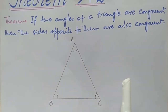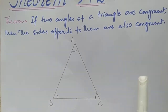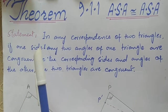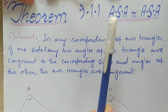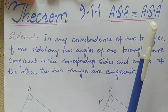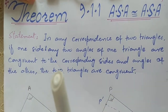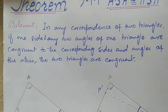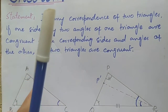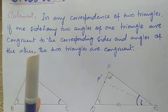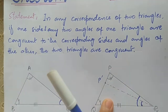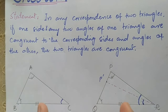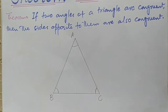We will use the previous theorem to prove this theorem — that is Theorem 9.1.1, the Angle Side Angle postulate. According to that theorem, if we have two triangles where two angles and one side of one triangle are congruent to the two corresponding angles and corresponding side of the other triangle, then the triangles are congruent. Let's get started with the proof.